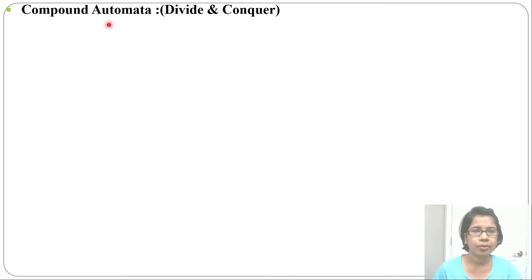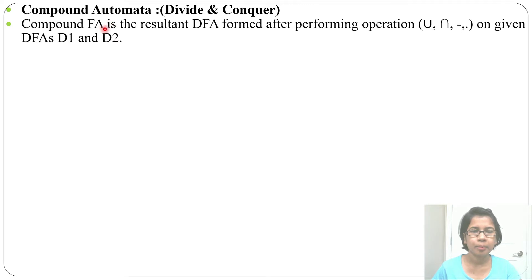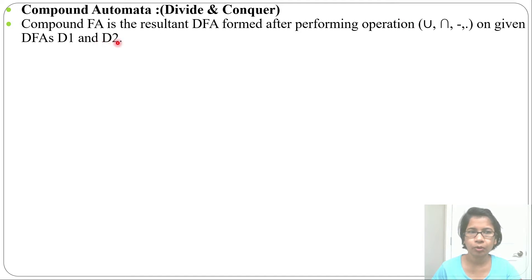Let's discuss compound automata. What is compound automata? When two automata are combined to form one automata, that is called compound automata. So compound FA is the resultant DFA formed after performing operations — union, intersection, difference, and concatenation — on given DFAs D1 and D2.